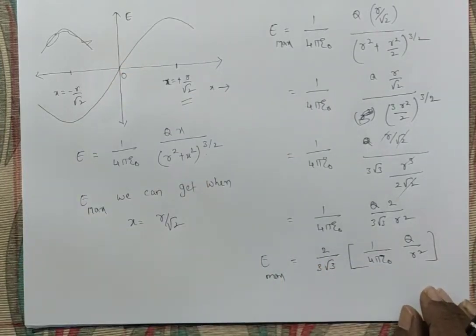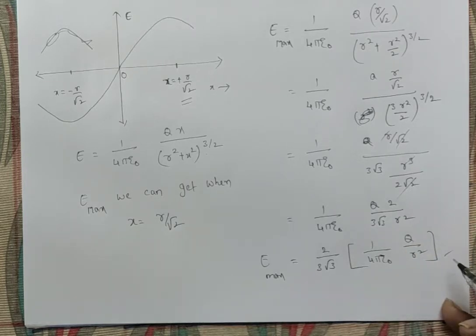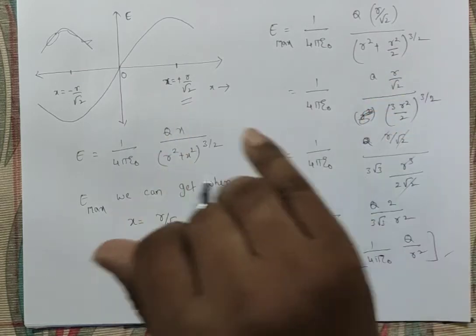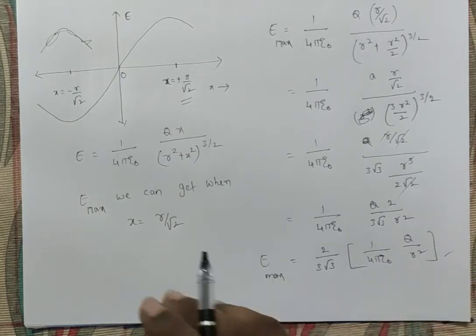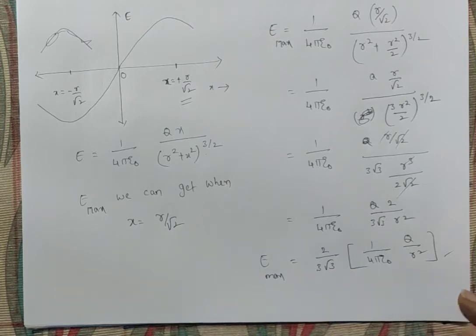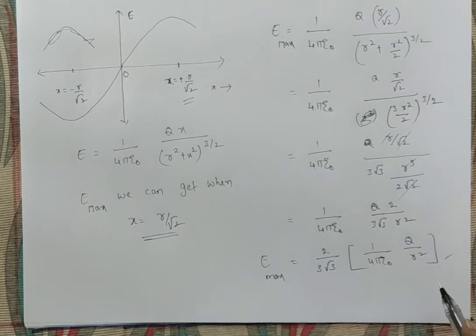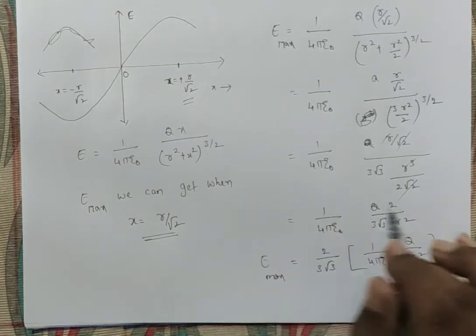These are the results we are discussing directly because in objective-type questions they will ask these results only. So directly we take the result: E_max occurs when X = R/√2. In this way we can find the electric field intensity due to a charged ring along its axis.